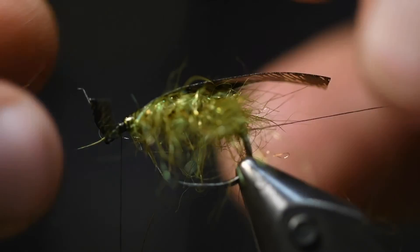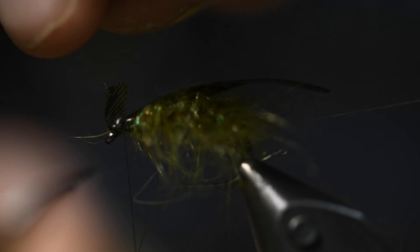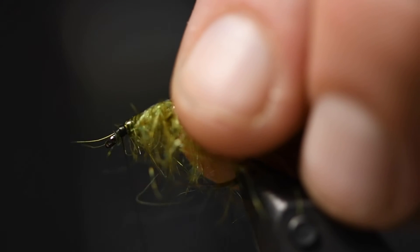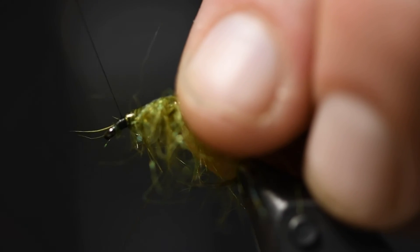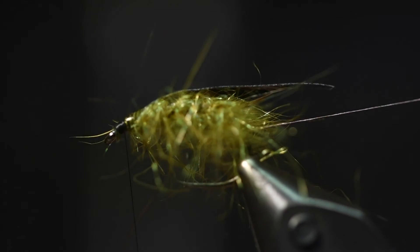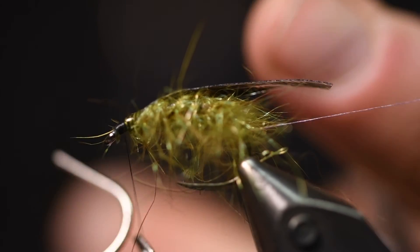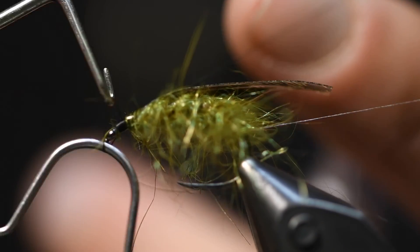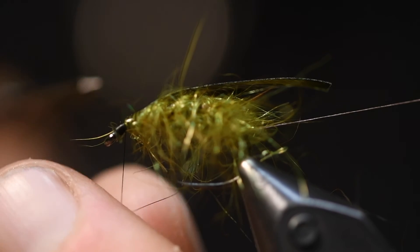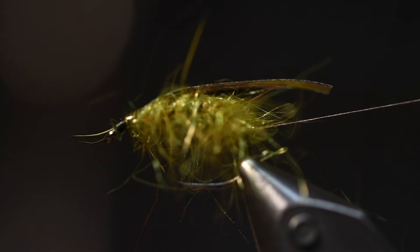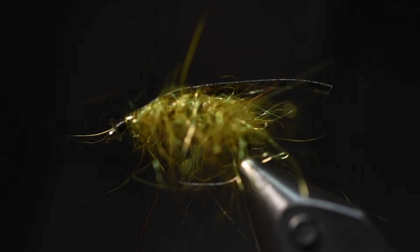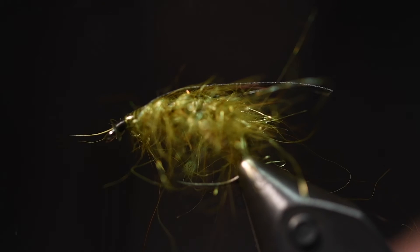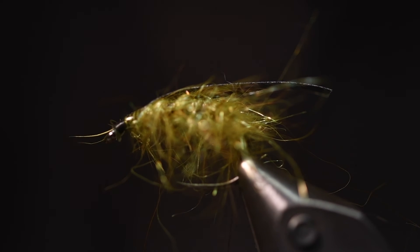Cut this off, cut this off, and whip finish. Now we can use that thread that I was working with in the beginning for both ribbing and of course to end the fly.